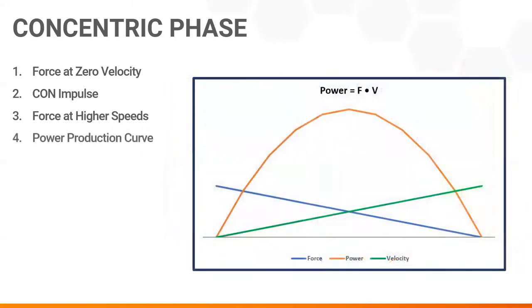As this simplified graph shows, power is a product of force output and velocity. Increasing either will improve a number of athletic performance factors.